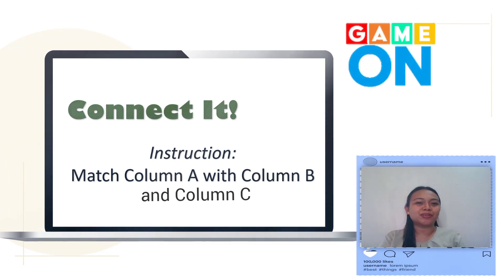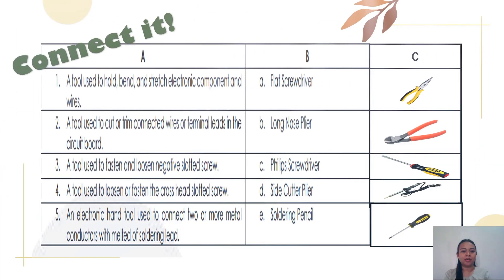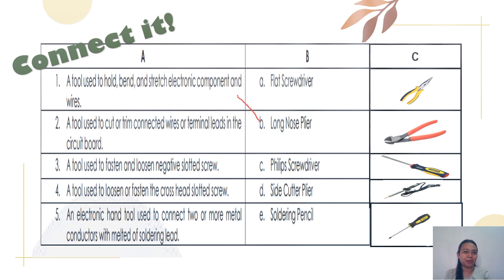Let's play an activity called 'Connected.' You will match Column A with Column B and C. Number one: a tool used to hold, bend, and stretch electronic components and wires. The correct answer is the long nose plier. Number two: a tool used to cut or trim connected wires or terminal leads in the circuit board.